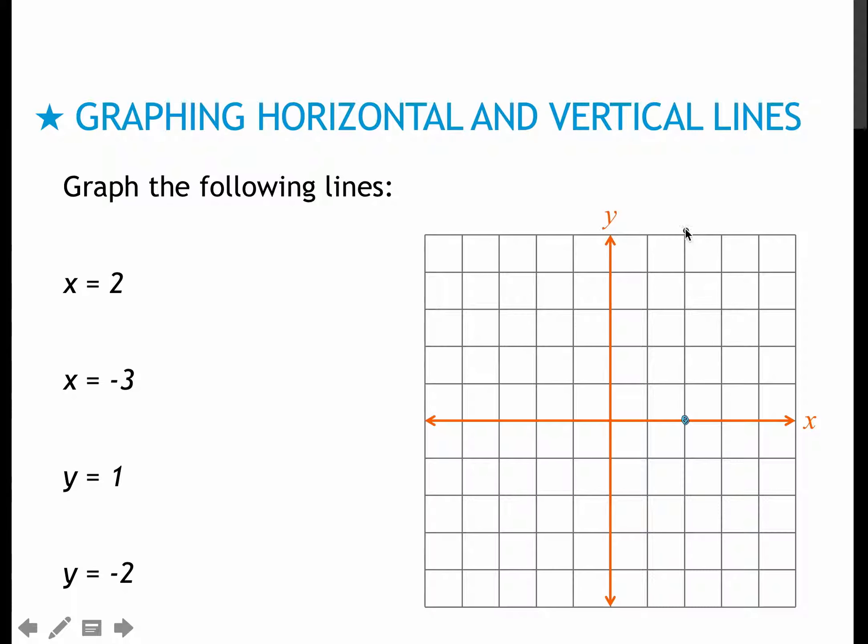For the first x = 2, again I'm going to go to where x is 2, and put a point, and then I'm going to draw a line that is perpendicular to the x-axis. So the x-axis is this one, and x equals equation is this way.